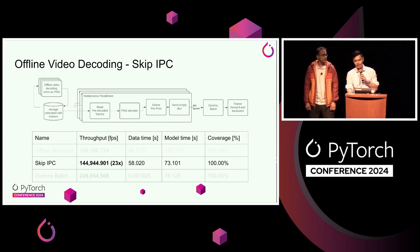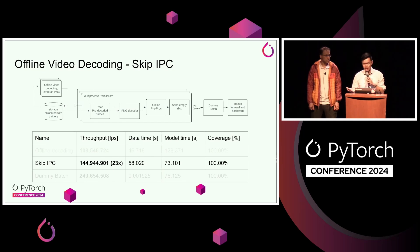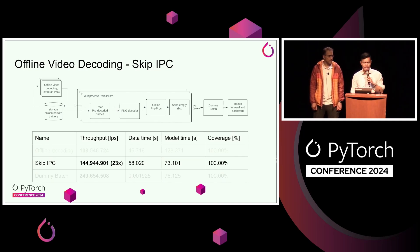To test this, we hacked into the code a bit. Just before the batch hits the IPC queue, we send an empty dictionary over the queue instead — basically not sending any data. On the trainer side, we use the same dummy batch from the headroom analysis. And you can see this actually brings the model time back down, which is what we wanted to see but still a little surprising. This is obviously not a useful approach in production — you can't just feed dummy batches.